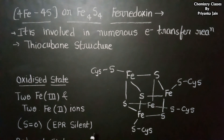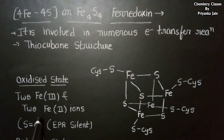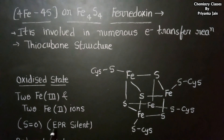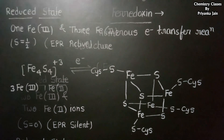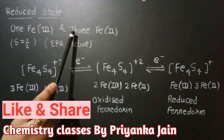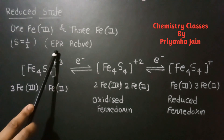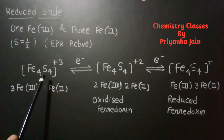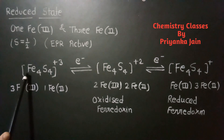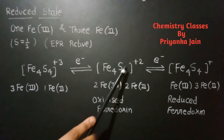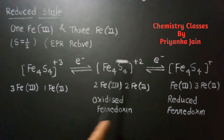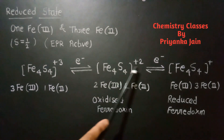Regarding the redox states of 4Fe4S ferredoxin: the oxidized state possesses two irons in +3 and two irons in +2, with antiferromagnetic coupling giving a total spin of zero — hence the oxidized state is EPR silent. The reduced state has one iron in +3 and three irons in +2, with a total spin value of ½ — so this state is EPR active. The Fe₄S₄ cluster can settle between three different oxidation states: [Fe₄S₄]³⁺, [Fe₄S₄]²⁺, and [Fe₄S₄]⁺.